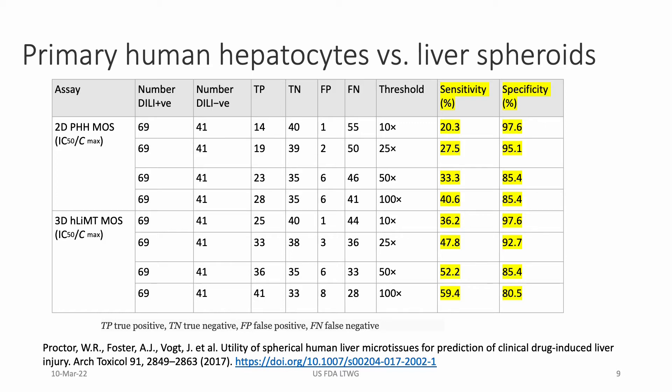The bottom line conclusion from this study was that liver spheroids performed markedly better than primary human hepatocytes — about 80% sensitivity versus 40% sensitivity at 85% specificity for primary human hepatocytes at a 100-fold margin of safety. Their argument was that liver spheroids would be the preferred methodology moving forward if you're trying to use a complex cell type to generate cytotoxicity data informative for DILI risk.